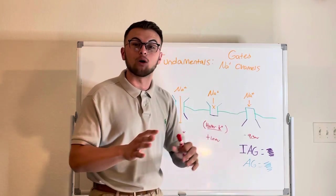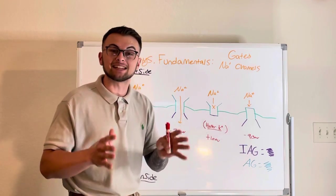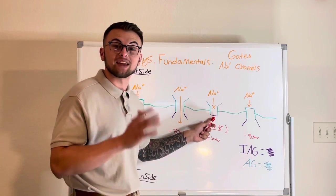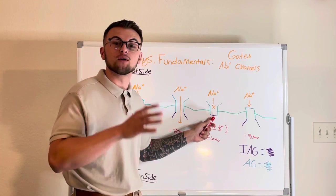Now clinically, when the cell becomes too positive for extended periods of time, the IAG brother will think that it is time to work and will keep his gate closed for too long.